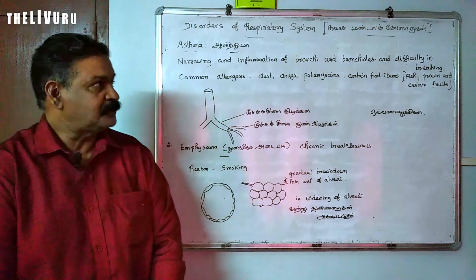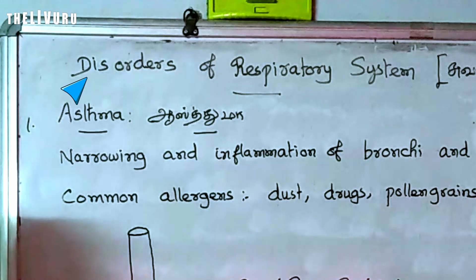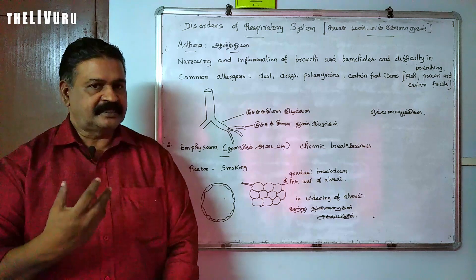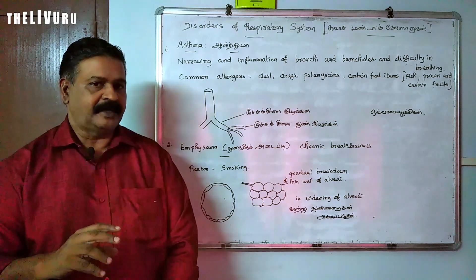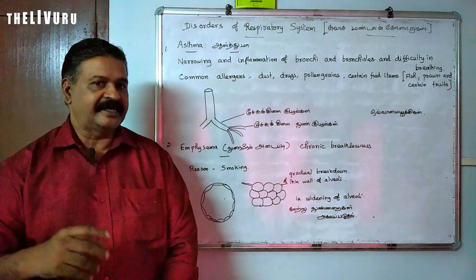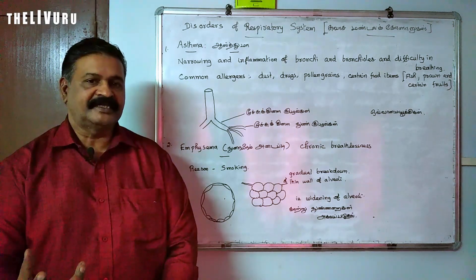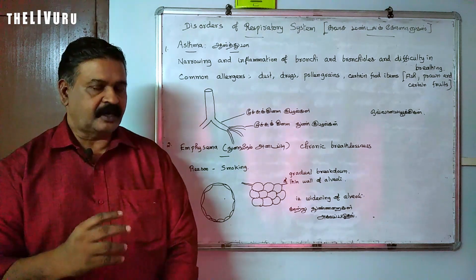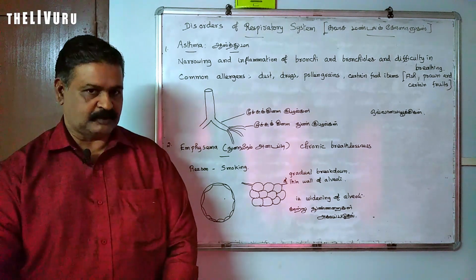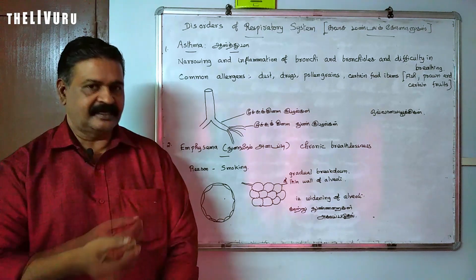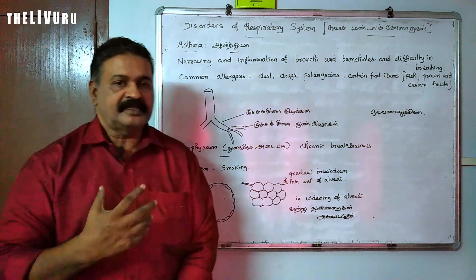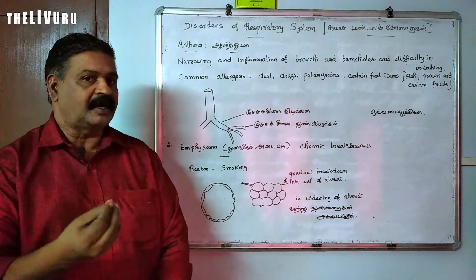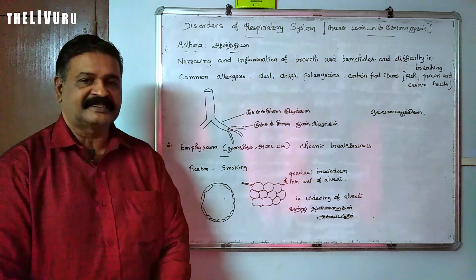Today we are going to discuss the disorders of the respiratory system. We have studied how respiratory gases are taken from the atmosphere to the lungs, then from the lungs to tissue, and how carbon dioxide is expelled out. Now we are going to see what are the disorders related to the respiratory system.